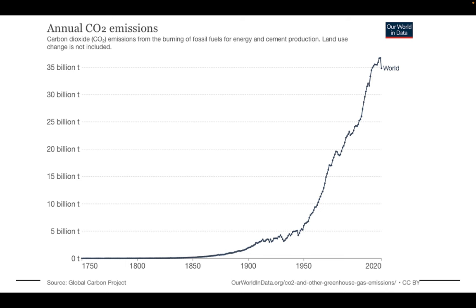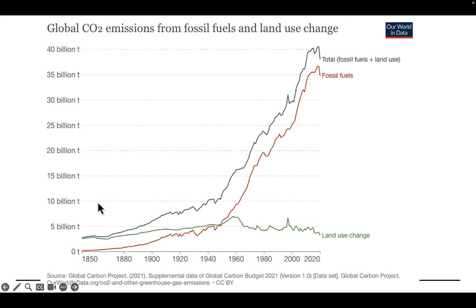If we look at annual CO2 emissions, we have burning of fossil fuels, and people will mention cutting down rainforests releasing carbon dioxide. That is incorporated with the green line representing land use change — the amount of CO2 released due to conversion of forests, which when they decay or burn releases carbon dioxide. But since the 1950s, fossil fuel emissions have far eclipsed what land use change is causing.